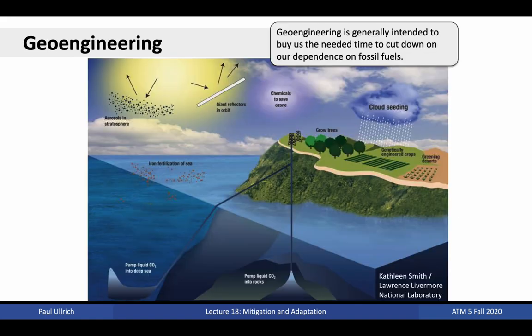The third approach to dealing with climate change is geoengineering. This method involves large-scale intervention in the climate system that is aimed to reduce the impacts of climate change. A few such approaches include injection of aerosols into the stratosphere, orbital reflectors, chemicals to enhance ozone production, cloud seeding, afforestation, genetically engineered crops, greening deserts, iron fertilization in the ocean, and carbon sequestration. Notably, carbon capture at source is generally considered a mitigation technology, whereas carbon capture from the air is considered geoengineering.